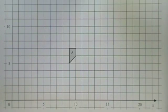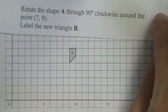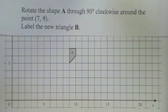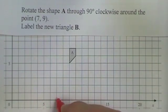This grid is showing a trapezium and it's been labelled A. The question says rotate the shape A through 90 degrees clockwise around the point 7,9. So let's identify the point 7,9, 7 across and 9 up.